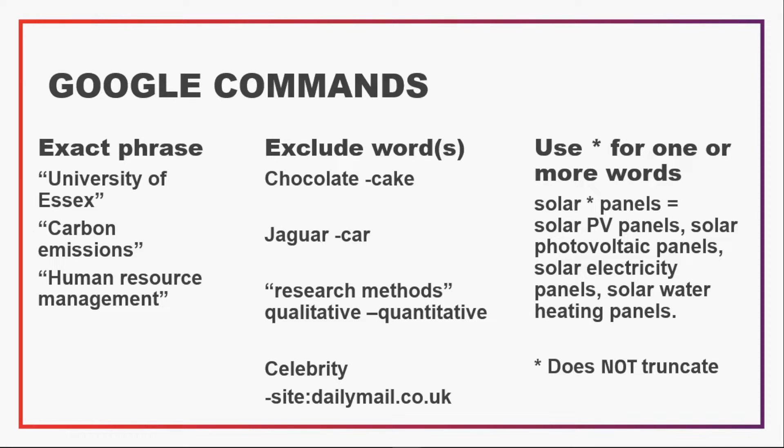You can also use the asterisk to stand in for up to five terms between two words. This is useful if you're not sure of the exact industry jargon and if you want to identify additional search terms or phrases related to your search. Note that this searches for one or more words and does not truncate the word, unlike academic databases. Google uses automatic word stemming so it searches for all possible word variations. For example, 'solar * panels' can return a whole variety of different results.